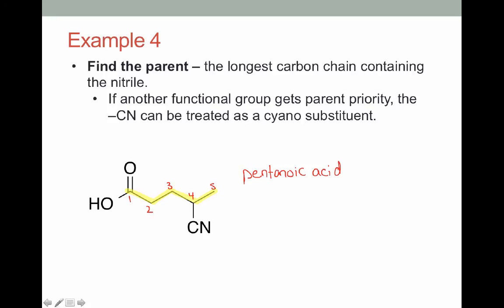Since now the nitrile isn't part of the parent, we treat it as just a substituent and we call it a cyano substituent. So now putting our name together, we do our substituents alphabetically followed by the parent, only one substituent to deal with. So we have 4-cyanopentanoic acid.